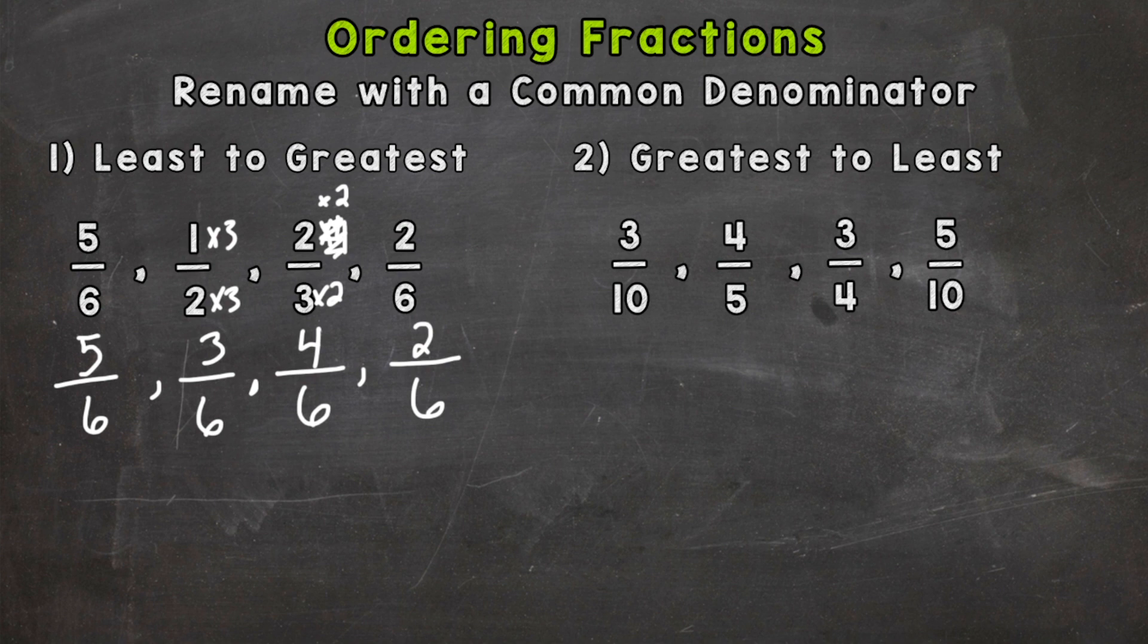Now that makes it much easier to order these fractions because everything has the same denominator. So least to greatest, our least is going to be 2 out of 6, right? 2 sixths. Next, well we have a 5, 3, and a 4. Obviously there are 3 sixths here or 1 half. I'm going to put the original fraction in my order down here at the bottom.